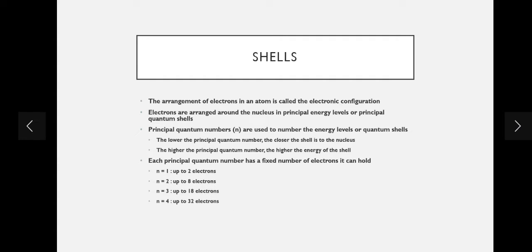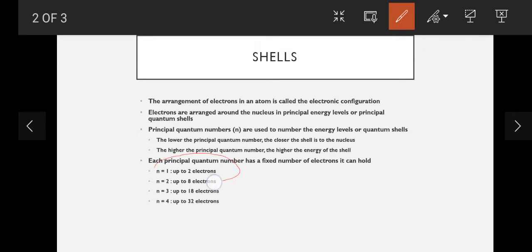Each principal quantum number has a fixed number of electrons it can hold. A shell can hold less than the maximum, but it cannot exceed the limit. For n=1, it can hold up to 2 electrons; n=2, up to 8 electrons; n=3, up to 18 electrons; and n=4, up to 32 electrons. So as you move further away from the nucleus, the capacity of each shell increases. At this level you need to be familiar with all four shells.